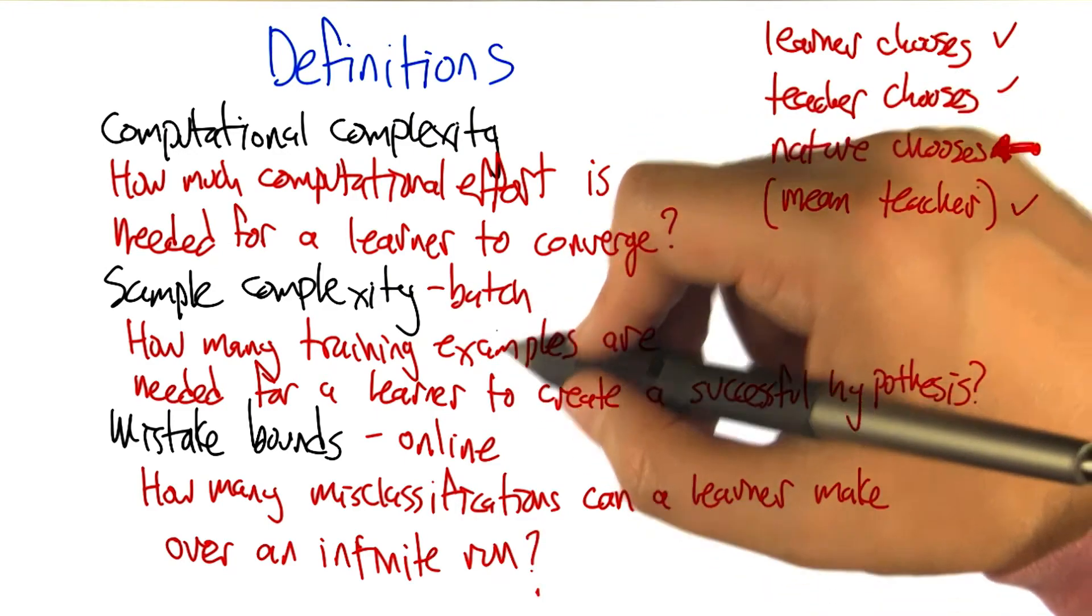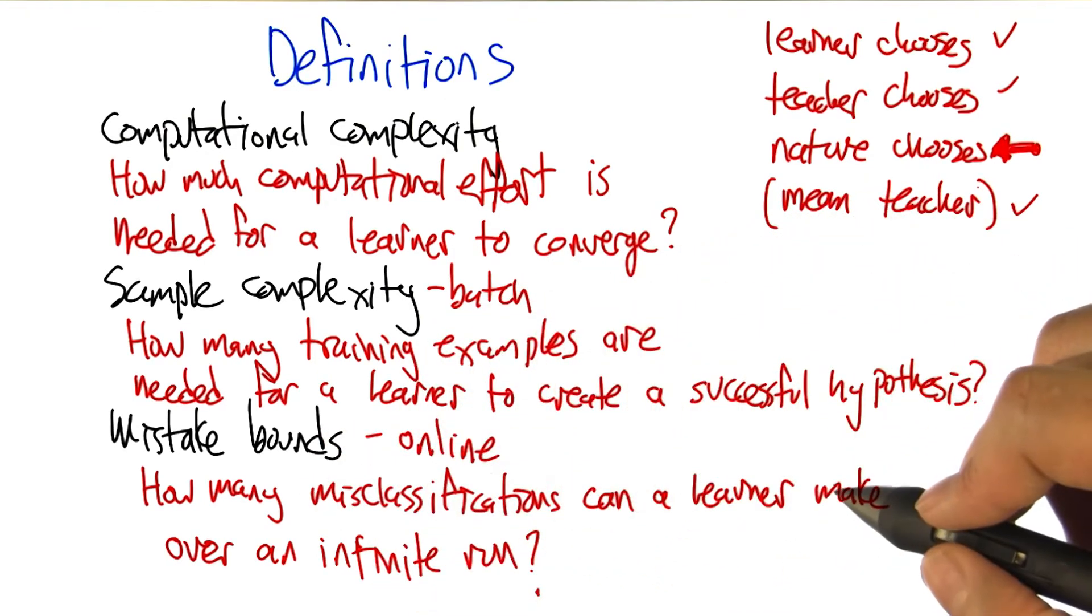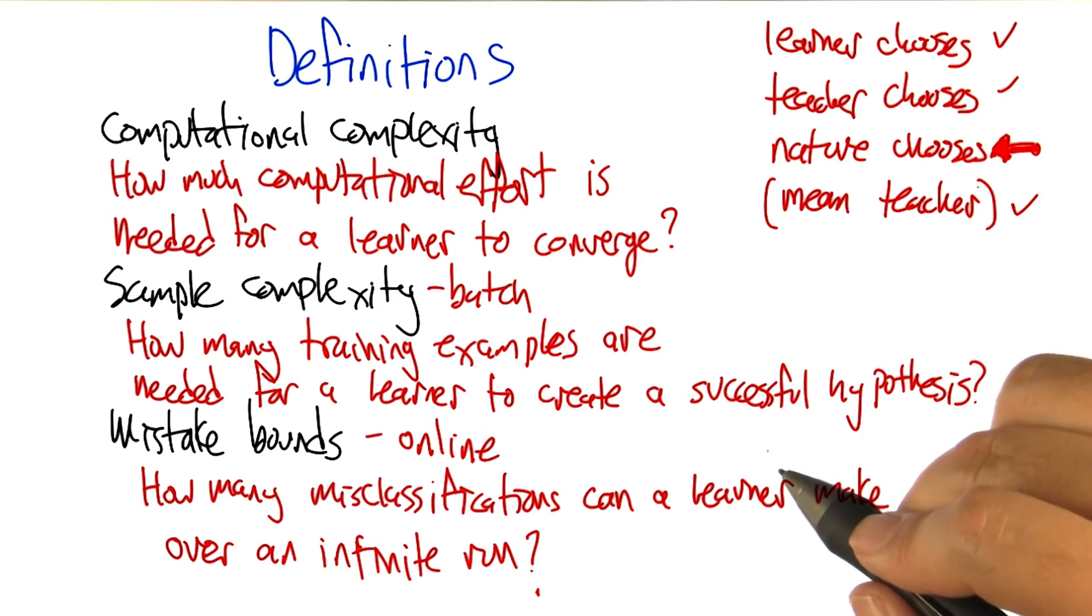And that's in the batch setting. In the online setting, we have this notion of a mistake bound. How many misclassifications can the learner make over an infinite run?